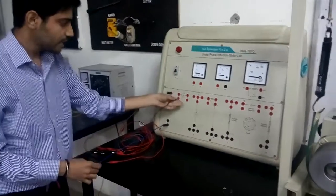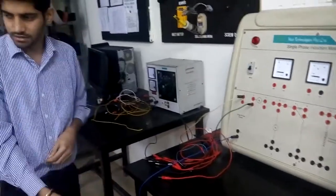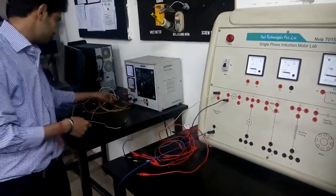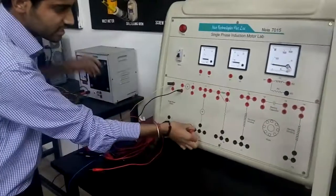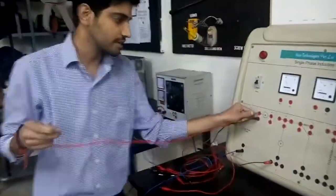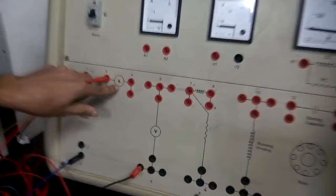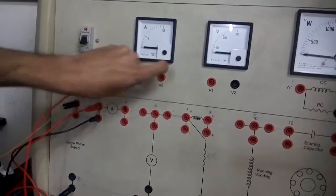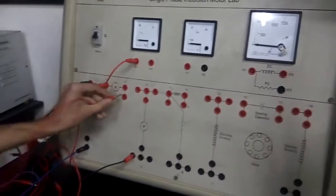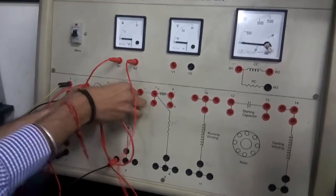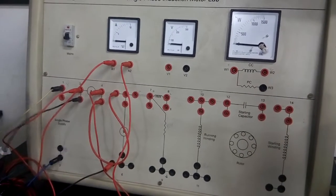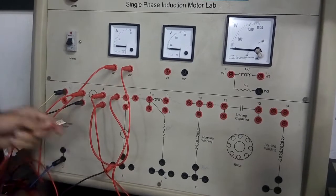We provide input to the ammeter. We forwarded the supply. Now we are going to connect the ammeter. As it is the property of the ammeter, it is always connected in series with the circuit. Here is the sign of the ammeter. We are going to connect the ammeter according to this sign. Now we put forward the supply and we have forwarded the supply.